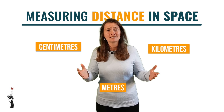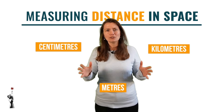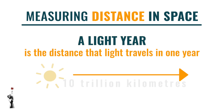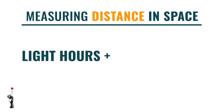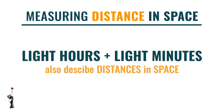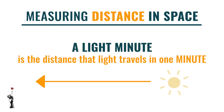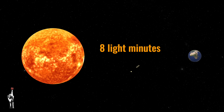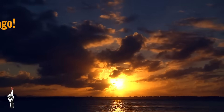Distances in space are enormous, so we use a different measuring unit. A light year is the distance that light travels in one year, which is about 10 trillion kilometers. Additionally, we use light hours and light minutes to describe distances in space — a light hour is the distance light travels in one hour, and a light minute is the distance light travels in one minute. The Earth is about eight light minutes away from the Sun, which means it takes light from the Sun eight minutes to reach Earth. So each time you watch a sunset, the Sun actually set eight minutes ago!